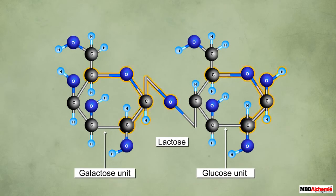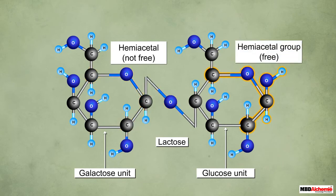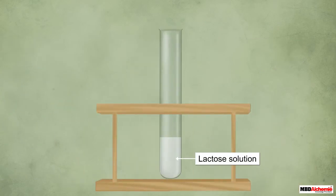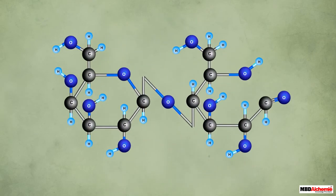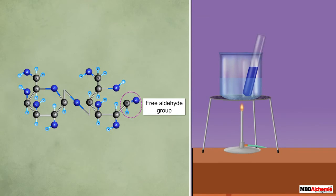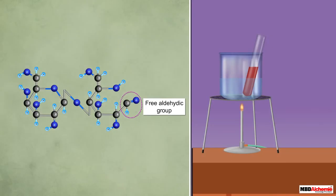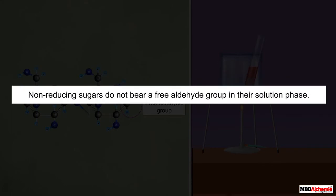Both galactose and glucose have one hemiacetal group. However, the hemiacetal group of the galactose unit takes part in the glycosidic bond formation, whereas the hemiacetal group of the glucose unit remains free. The ring of the glucose unit of lactose opens up in the solution phase and its free hemiacetal group changes to a free aldehyde group. The free aldehyde group enables lactose to get oxidized by Fehling's solution, thus making it a reducing sugar.